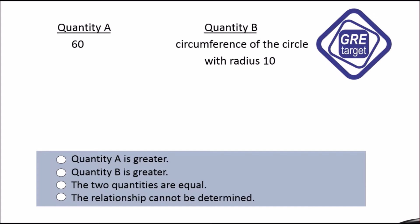We know the formula for circumference. The circumference formula is 2πr. Now, we know the radius, so we replace r with 10. So, 2π into 10.